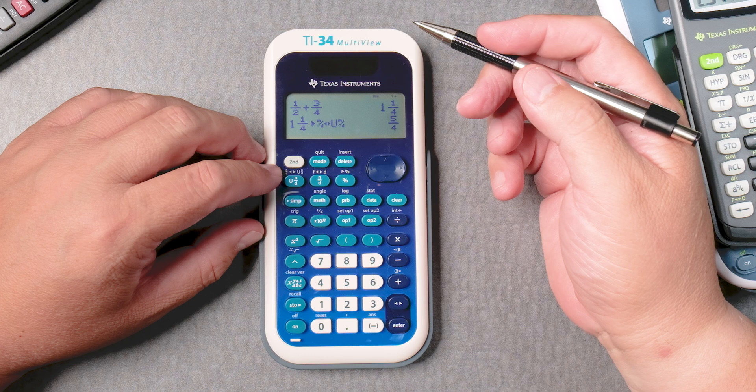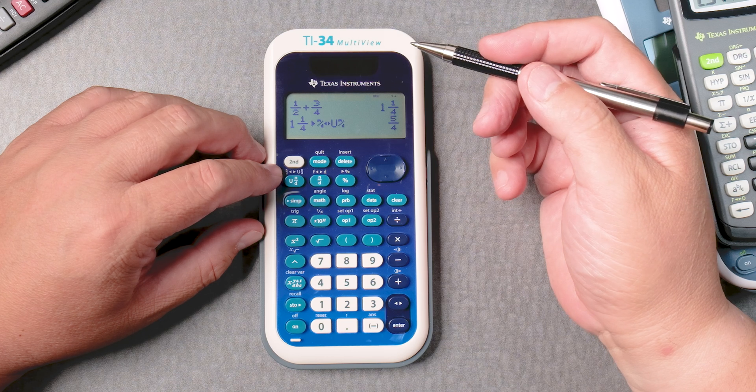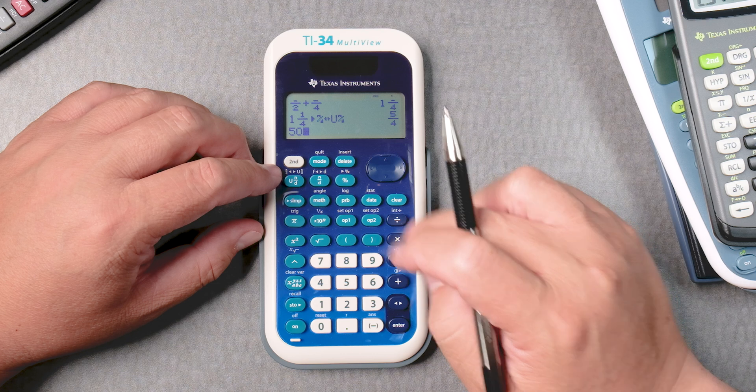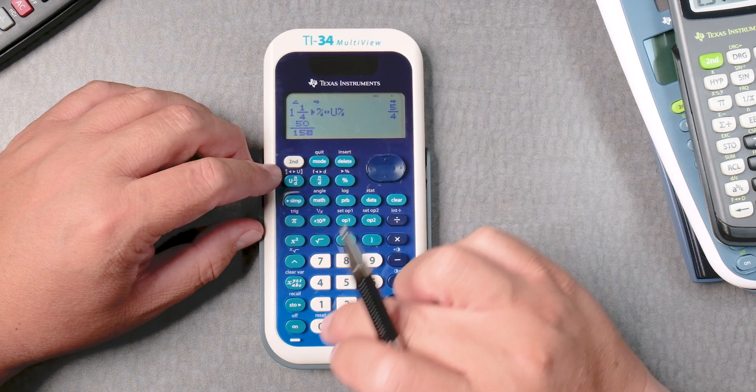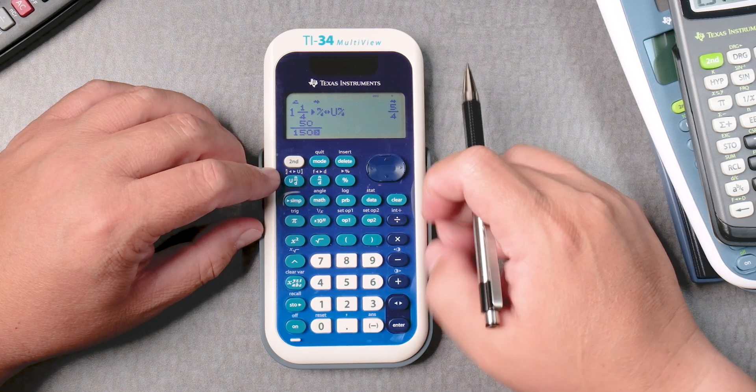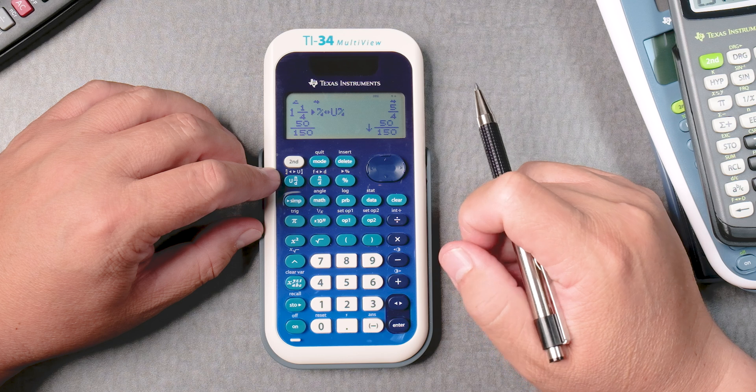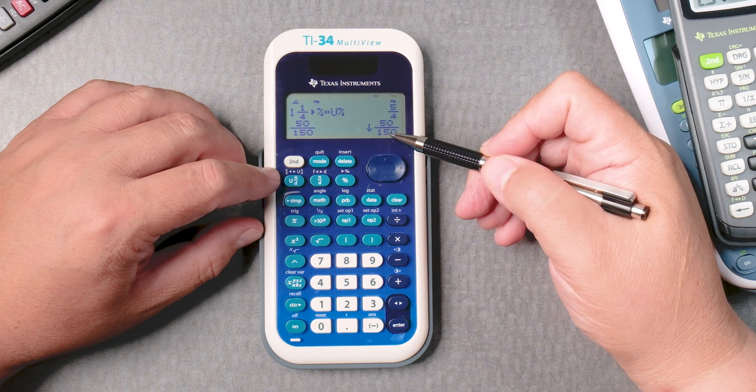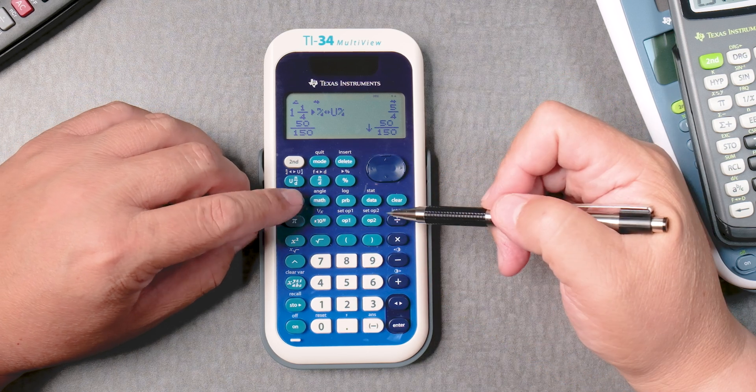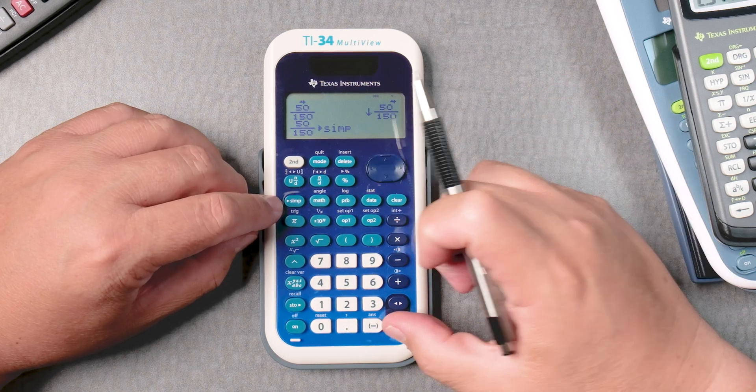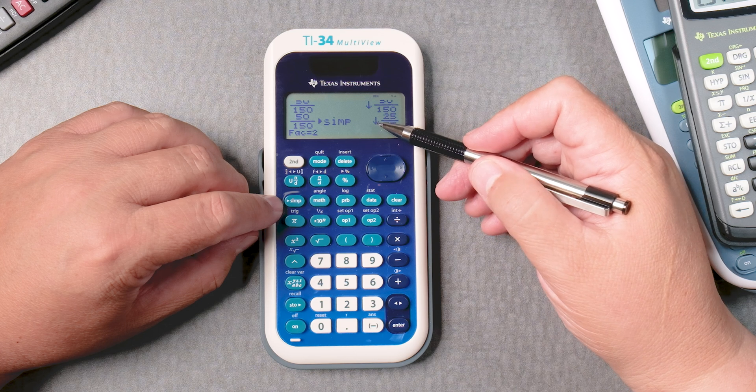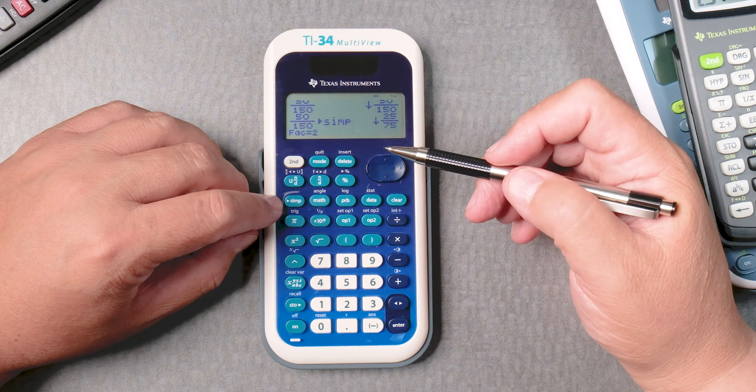Let's say you wanted to reduce 50 over 150. You can press enter, and there's an arrow showing there are steps to reduce this. So you press simplify, then enter, and it gives you 25 over 75, but there's an arrow, meaning there's more to simplify.